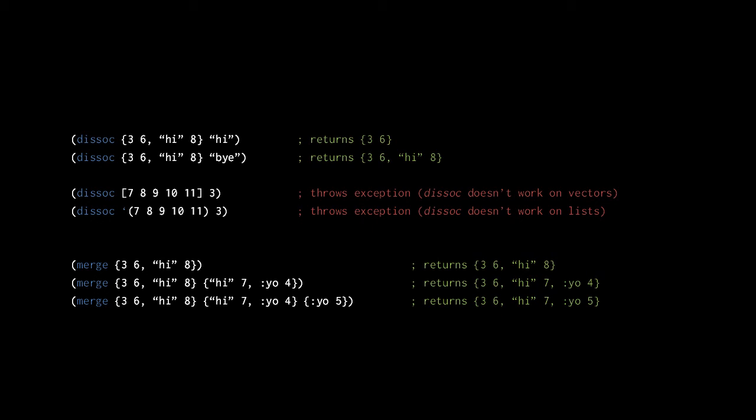Notice that the returned map's key "high" has the value seven, not eight. The third merge call returns a new map in which the key-value pairs of the successive maps are added to the first, left to right, overriding existing values for keys as necessary. So notice that the returned map's key "yo" has the value five, not four.